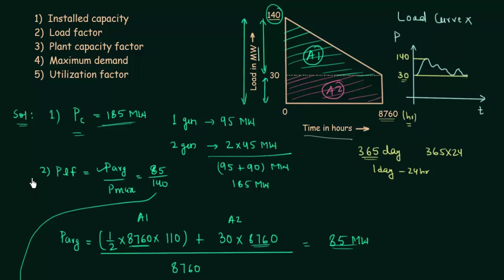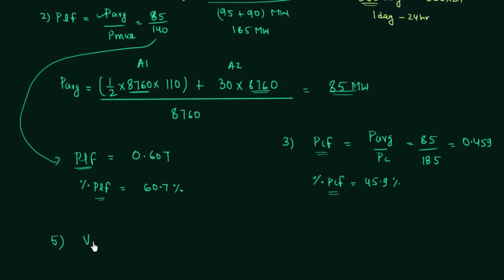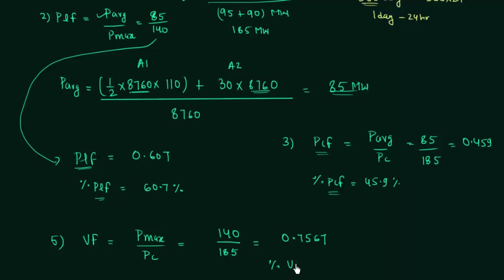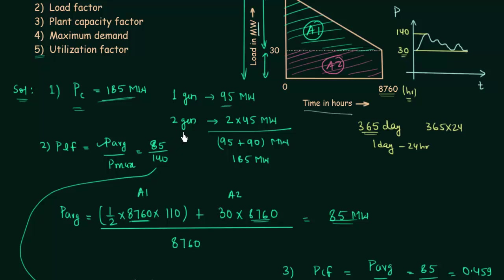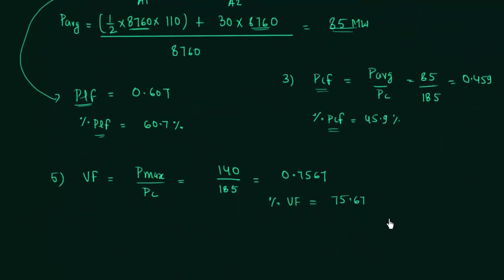The fifth part is to find the utilization factor. Utilization factor = maximum power Pmax / plant capacity = 140 / 185 = 0.7567, so the percentage utilization factor is 75.67%. The power plant having one generating unit of 95 megawatt and two generating units of 45 megawatt is utilized 75.67%.